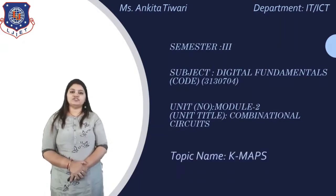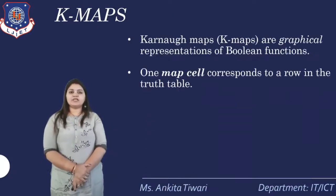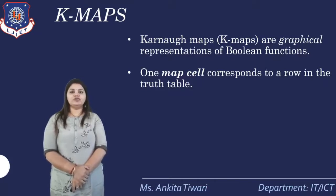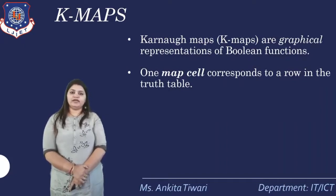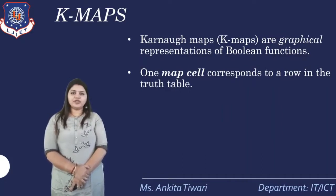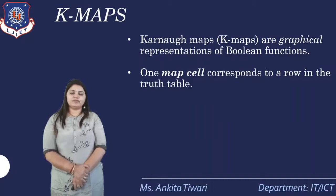The topic we are going to cover in this session is K-Maps. K-Maps are graphical representations of Boolean functions. Boolean represents only two values, that is 0 or 1. K-Map is a table structure containing cells represented by rows and columns. One map cell corresponds to a row in the truth table. The values from the truth table are put into the K-Map and reduced to a minimum function.